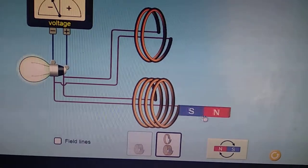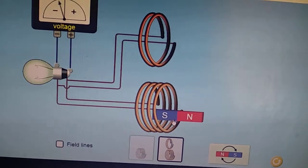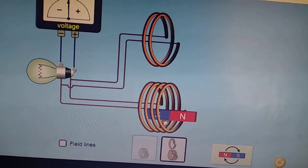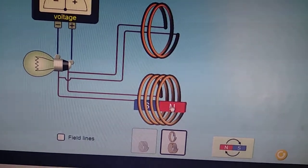See, now, when we move the magnet towards the coil having large number of turns, the magnitude of induced EMF is large, intensity of the bulb glowing is large.